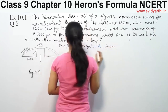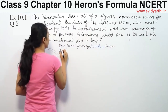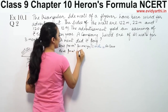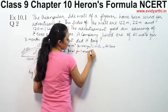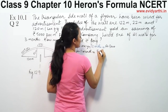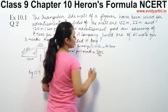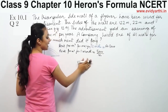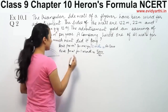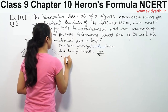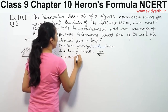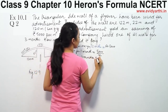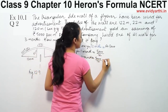We know the rent is 5,000 rupees per year, and 1 year equals 12 months. So for 1 month the rent per meter square is 5,000 divided by 12. For 3 months, the rent per meter square is 5,000 divided by 12, multiplied by 3.